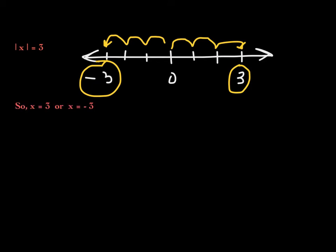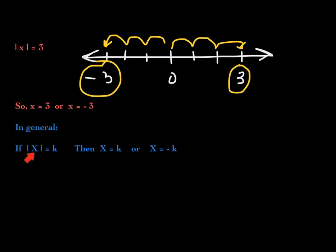So we have two solutions: either x is 3 or x is negative 3. These are the only two numbers whose absolute value is exactly 3 units. This leads us to a generalization. If the absolute value of capital X — where capital X represents any algebraic expression — is equal to k, remember k is going to have to be positive because the absolute value is always positive by its definition.